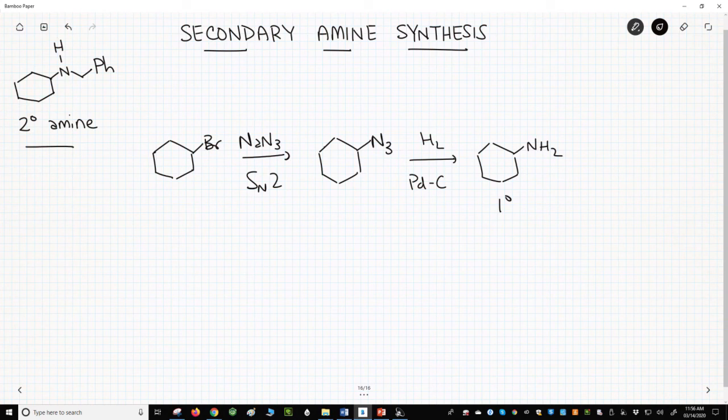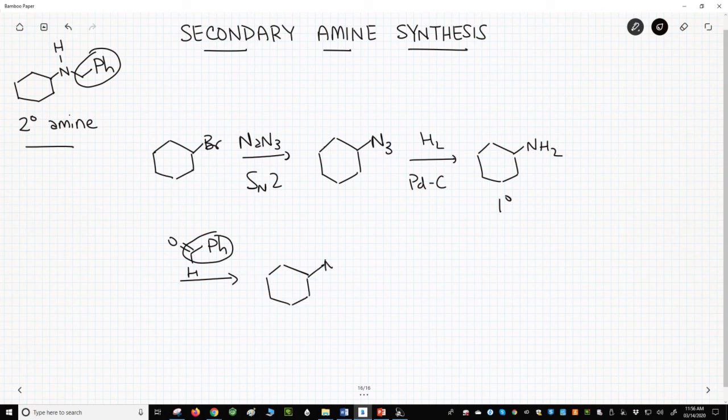Once we have a primary amine, we can react it, and we'll continue on a second line, react it with a carbonyl compound. In this case, we want to use a carbonyl compound that contains all the carbons of the alkyl group that we're going to need. These will react to form an imine.